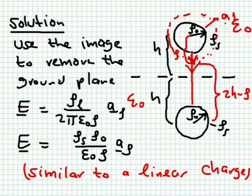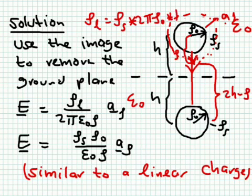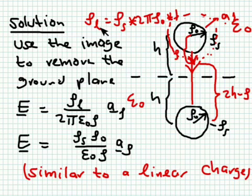Here we don't have a linear charge — we have a surface charge, meaning coulombs per square meter — while the field expression needs a linear charge. The linear charge is simply the charge per one meter. So by definition, the linear charge equals the surface charge density multiplied by the surface area of one meter of the wire, which is 2π ρ₀ × 1. Multiplying the circumference 2π ρ₀ by ρ_S gives the charge per meter. Substituting into the field expression, 2π cancels 2π, leaving ρ_S ρ₀ / (ε₀ ρ) â_ρ — exactly the same form, varying as 1/ρ.